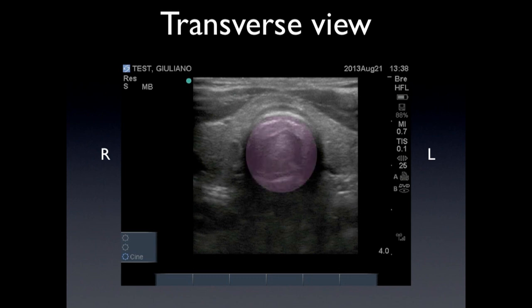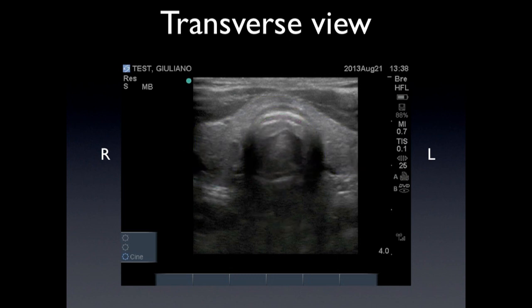This is the transverse view. You're going to see where the trachea is — there in the middle of the screen — and anterior to the trachea you're going to have the thyroid. You're going to have the right lobe and the left lobe connected by the isthmus.